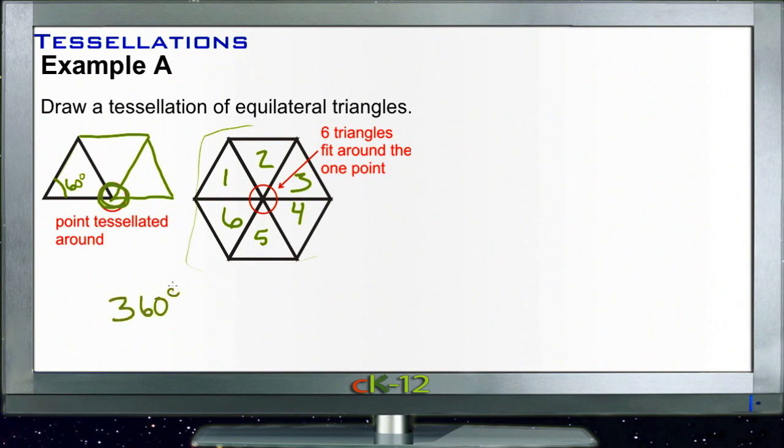We're doing that 60 degrees at a time, which evenly divides by six. So we shouldn't be surprised to find that it takes six triangles to get all the way around that corner.